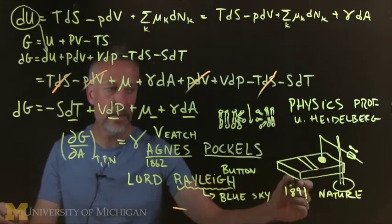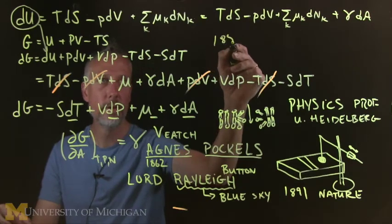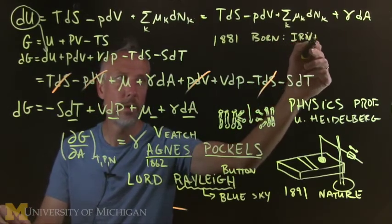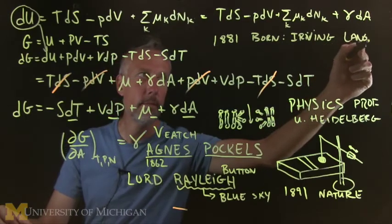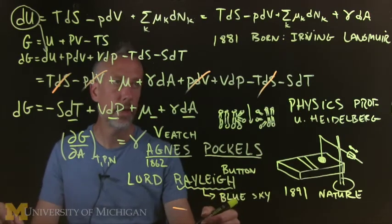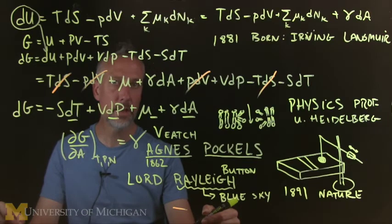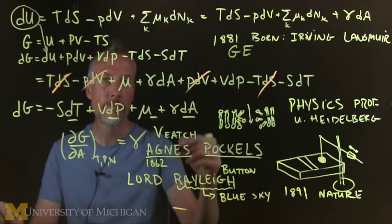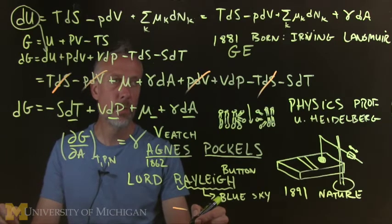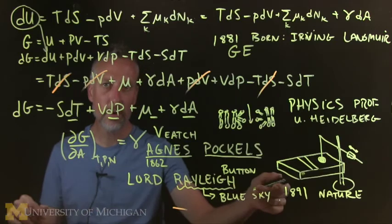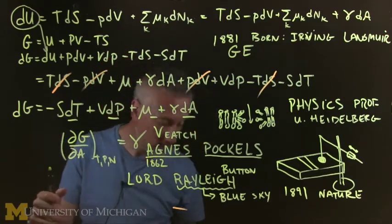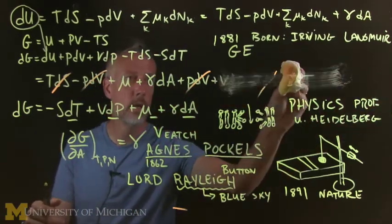This story doesn't end. So she lived out her days at the University of Heidelberg being a physics professor. And around the same time, in 1881, was born Irving Langmuir. So he's one of the big shot American scientists from the early, late, from the 20th century. And he worked at GE, General Electric. And he was studying interfaces. He won the Nobel Prize for his work on surfaces. And when he was studying surfaces, he saw the work that Agnes Pockels had done, and he ran with it. But he didn't run alone.